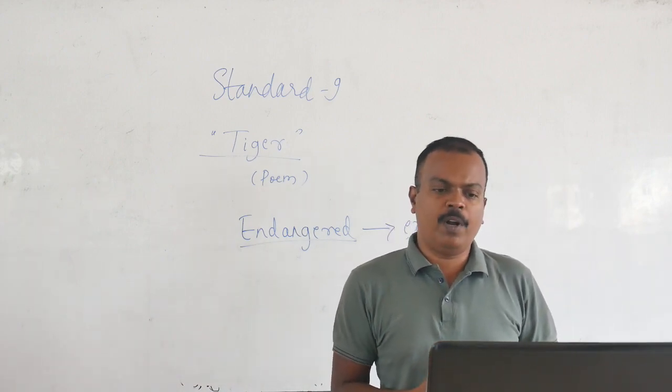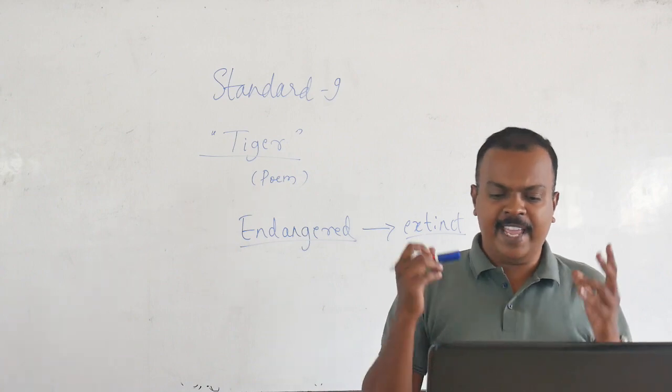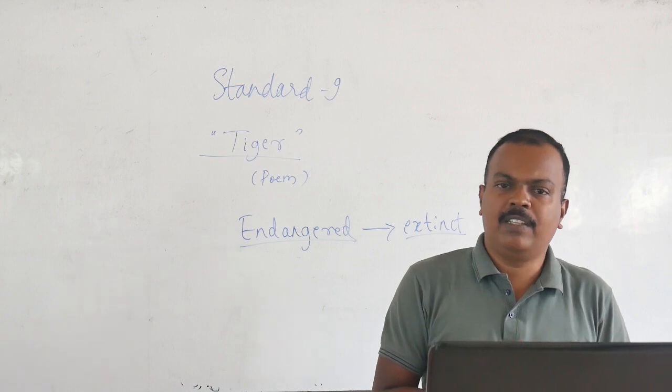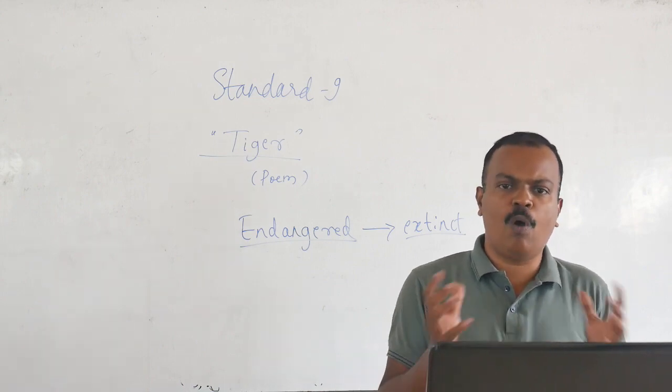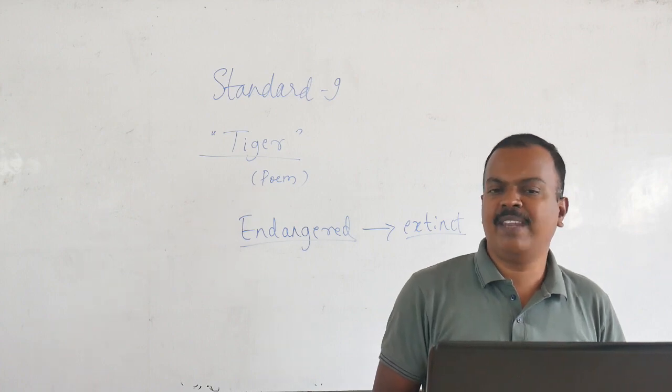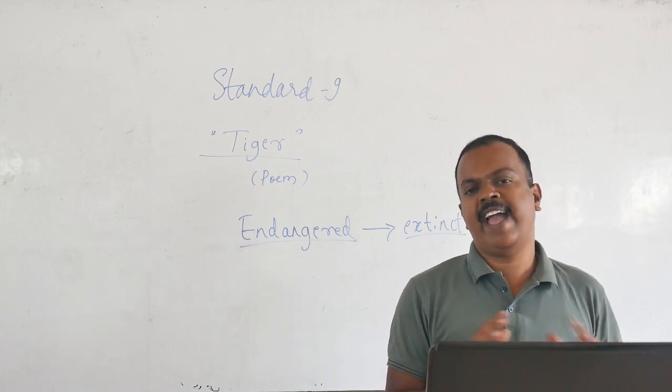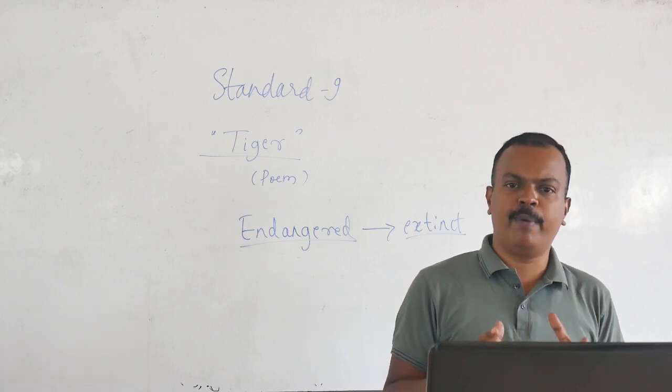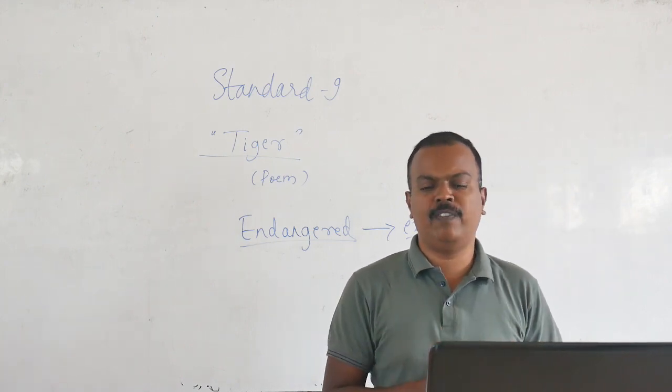What is meant by extinct? Extinct is losing existence. If an animal dies out and is no longer in existence, then we call that animal an extinct animal. So endangered animals are at the risk of becoming extinct in the near future.